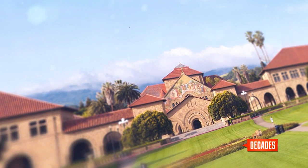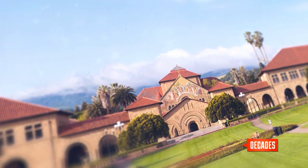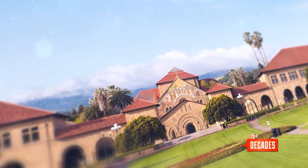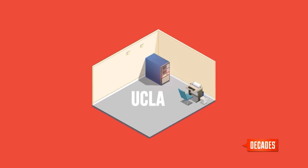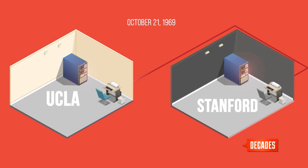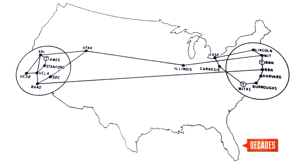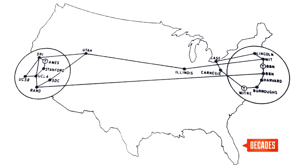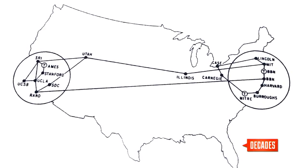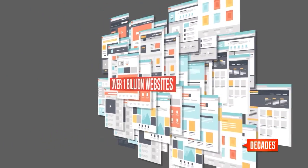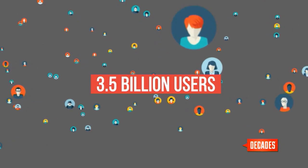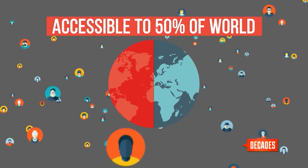It worked so well that Stanford University set up its own router, and the two host computers at UCLA and Stanford were able to exchange data. The first typed message ever sent over a computer network came from UCLA to Stanford on October 21st, 1969. It was supposed to be the word LOGIN, but only the letters L and O were transmitted before the system crashed. Still, the precedent was set. And by 1971, 15 computers at universities throughout the U.S. were on the ARPANET network. The network would evolve into the Internet we know today, one with over one billion websites and over 3.5 billion users. Almost 50% of the world's population has access to the Internet today.